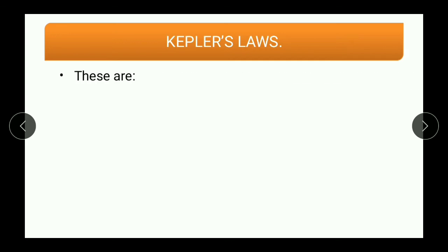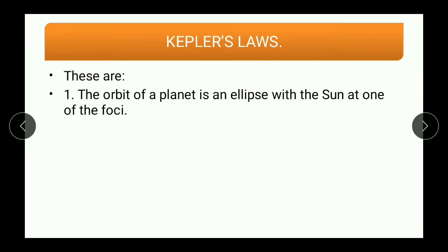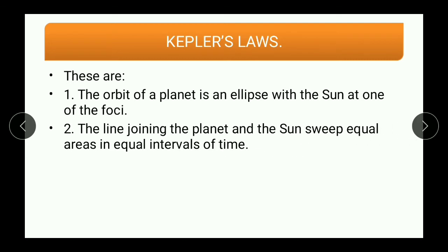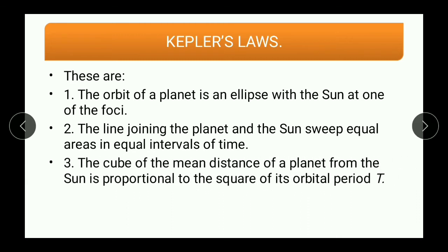Now let us see Kepler's Laws. There are three laws. The first is: the orbit of a planet is an ellipse with the sun at one of the foci. The second law is: the line joining the planet and the sun sweeps equal area in equal intervals of time. The third law is: the cube of the mean distance of a planet from the sun is proportional to the square of its orbital period T, and the relation is R cubed upon T squared equals constant. These three laws were proposed by Kepler based on observations noted by Tycho Brahe.